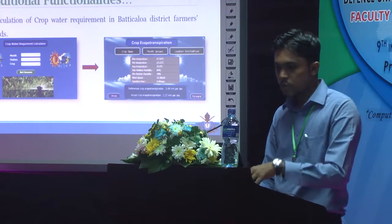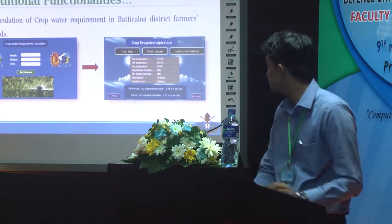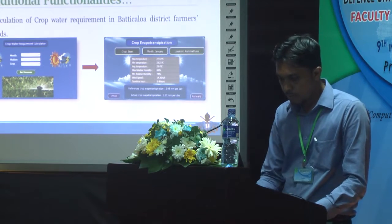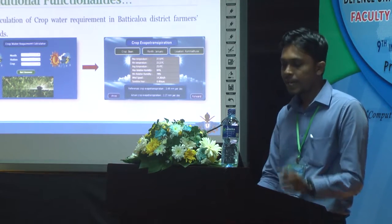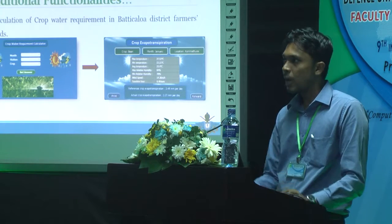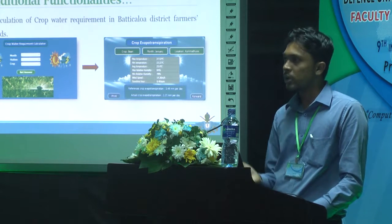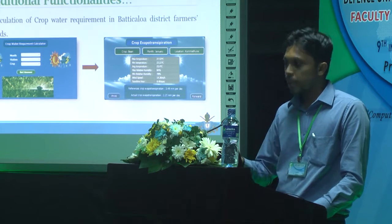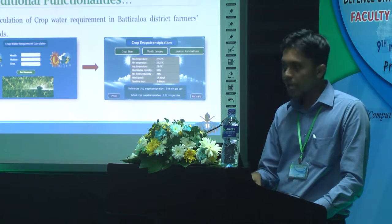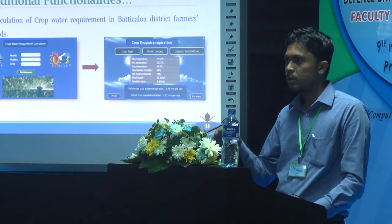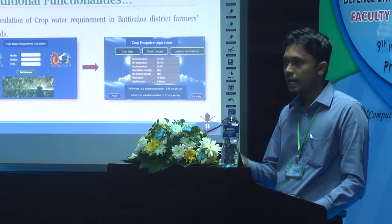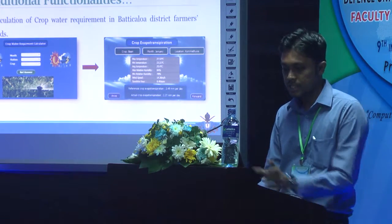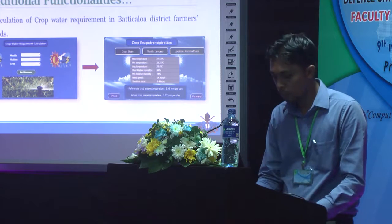Another key functionality allows the system to calculate how much water will evaporate from the particular soil as well as from the particular plant — that is, evapotranspiration. Based on that calculation, the irrigation schedule can be determined.